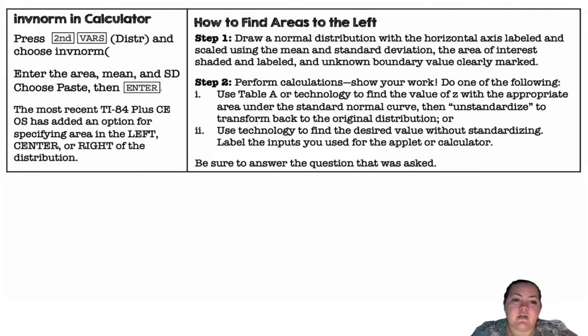Alright, so we're going to be using the inverse norm function in your calculators. To get there you're going to do second VARS which is the distribution menu and then go to inverse norm. You're going to put in your area, your mean, and your standard deviation and choose paste. If your calculator has a newer operating system on it, it will give you the option of left, center, or right. If your calculator doesn't have that option, it's always going to be finding the area to the left.